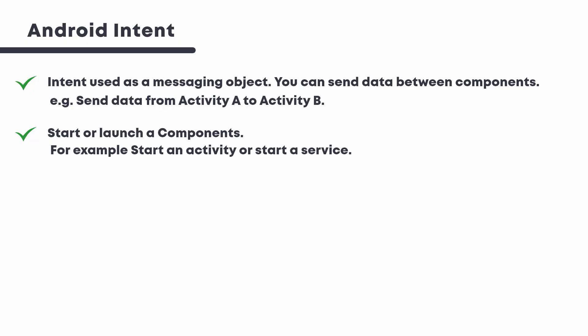In Android, an intent is used as a messaging object that is passed between components such as activities, services, broadcast receivers, and content providers. It is generally used to start a component from another component. For example, we can start an activity from another activity, or start a service from an activity, and so on. Also remember, there are two types of intents in Android.